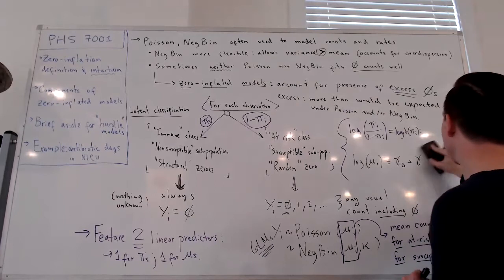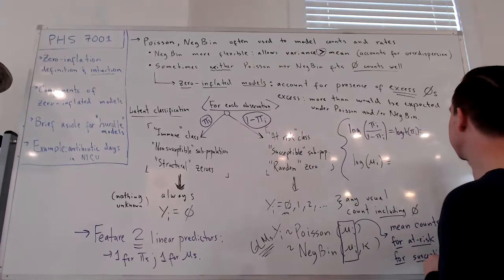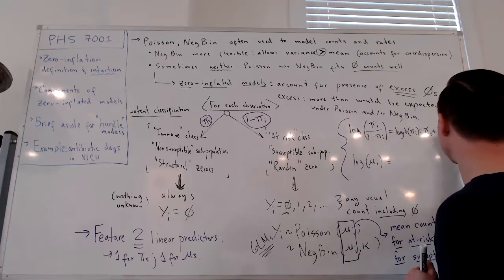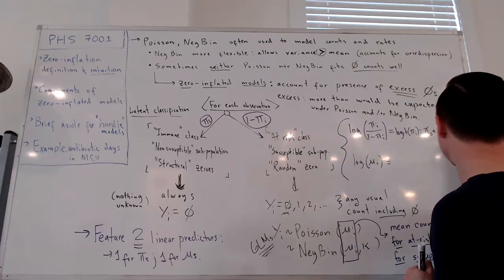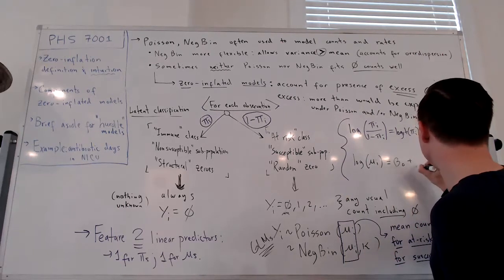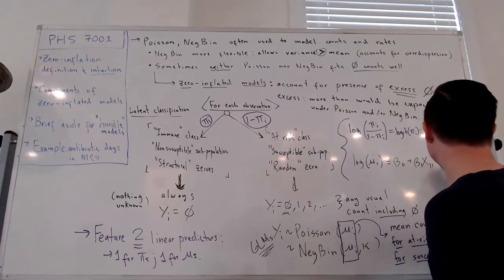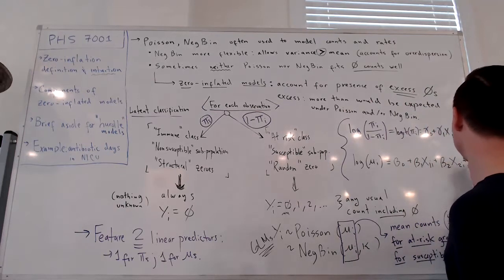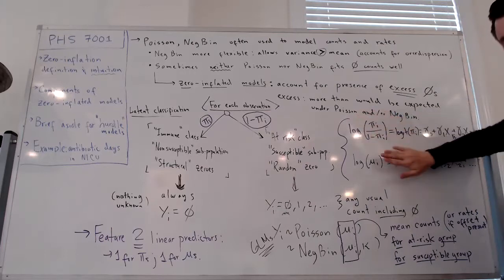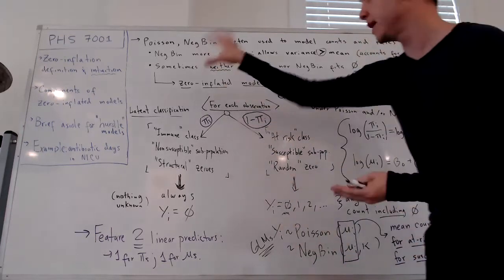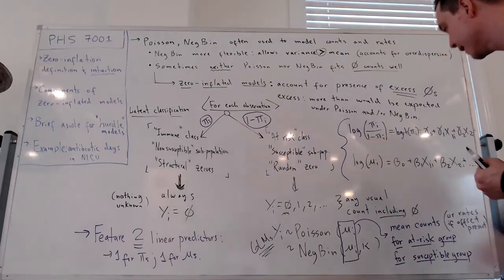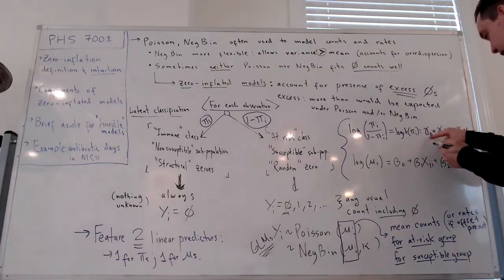We're going to have the log of each pi over one minus pi — that's the logit — equal to a linear predictor in terms of gammas. And we have a second linear predictor for the mu's using the log link function, in terms of betas. We use different Greek characters because these coefficients are fundamentally different. The zero-inflated model combines two linear predictors: the logit link for pi and the log link for mu, with a different set of coefficients estimated for each.